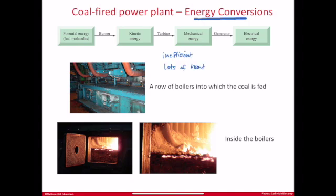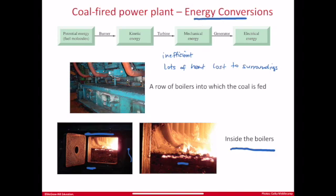Heat is lost to the surroundings. The first step was coal burned in a combustion reaction, used to boil water. Anytime there's a flame or combustion reaction, things get very hot — the whole area around the fire is hot, and the whole interior of a coal-fired power plant is hot. That's heat lost to the surroundings.